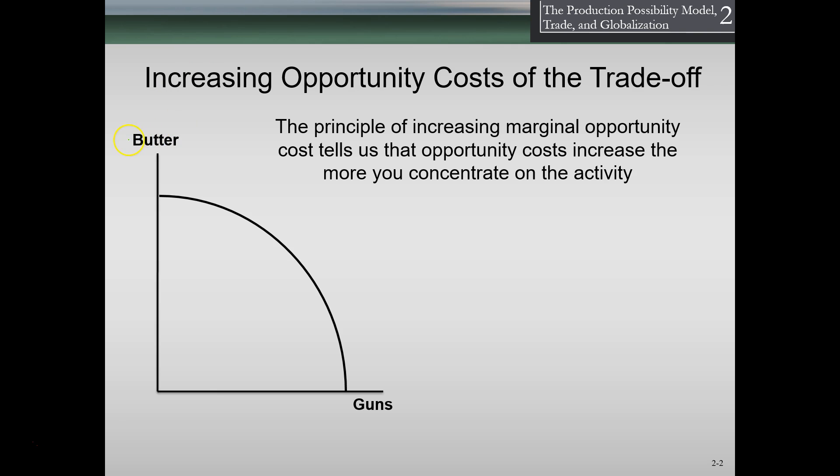This is a traditional production possibility frontier where we're going to have an increasing opportunity cost of the trade-offs. The principle of increasing marginal opportunity cost tells us that the opportunity costs increase the more you concentrate on one activity.